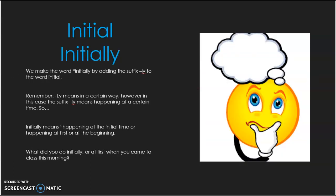Something else that we want to take a look at and make sure we understand relates to suffixes. We can make the word initially. You see that here. We have initial and initially by adding that suffix ly to the word initial. We know that ly means something that's done in a certain way. However, in this case, it means happening at a certain time. So initially means happening at the initial time or happening at the first or at the beginning. What did you do initially or at first when you came to class this morning?